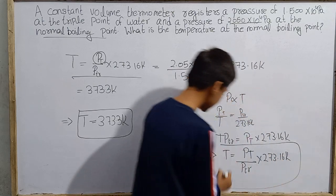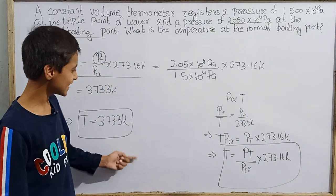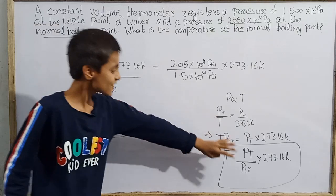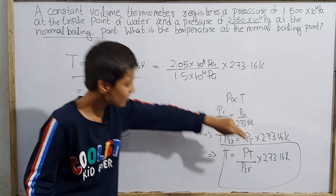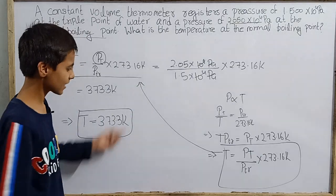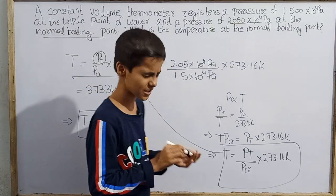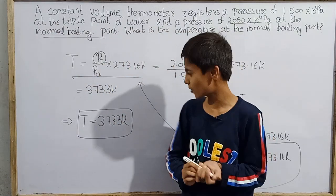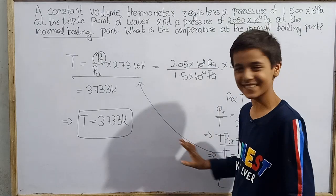So that temperature at this point is PT by PTR into 273.16 Kelvin. We have derived the equation. We were actually to solve this problem, but if you don't want, you can first of all derive the equation. You can solve the problem. Actually, this is a very basic equation, so you might have been knowing about it. That was just for fun.